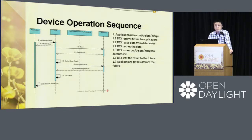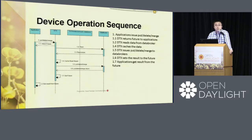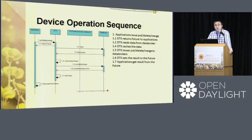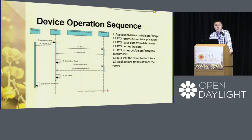At this point the data to be operated on is saved in the local cache. DTX then issues the real put, delete, or merge to the device — this is where the real write to the device happens. The data broker writes the real data to the device or database. After DTX gets the result of the real write, it sets the result in the future that was returned to the application, so the application is notified that the task is done. This is the successful case for a device operation within a transaction.